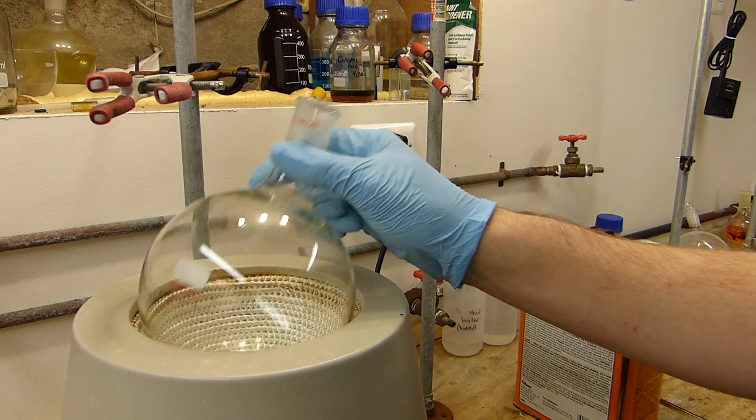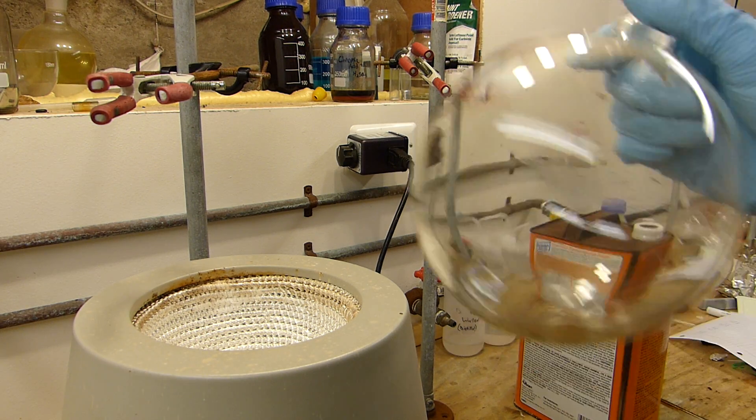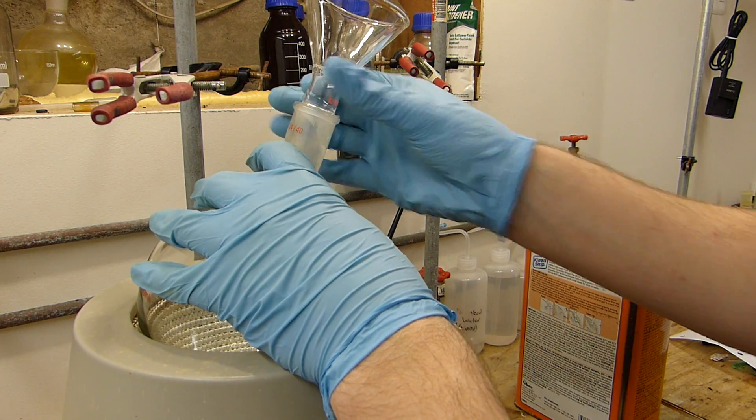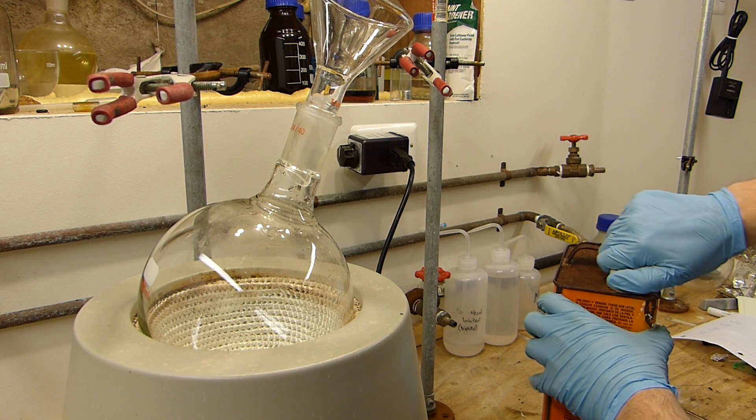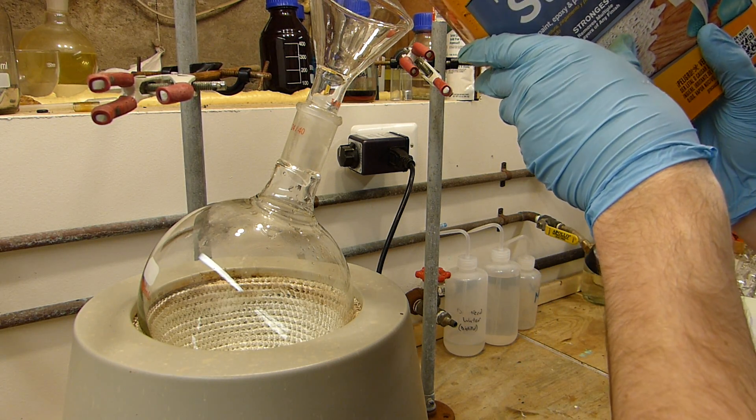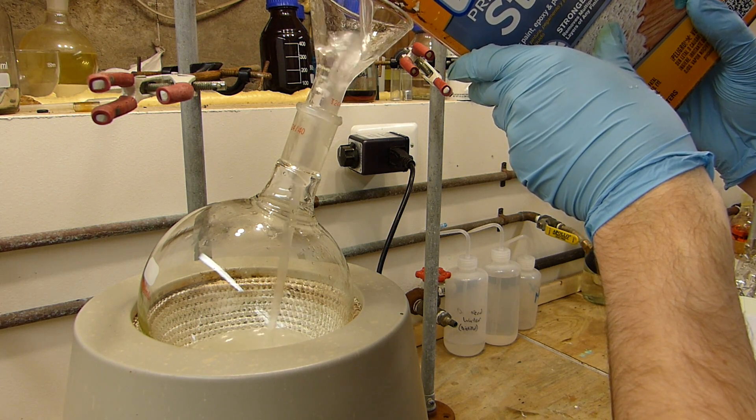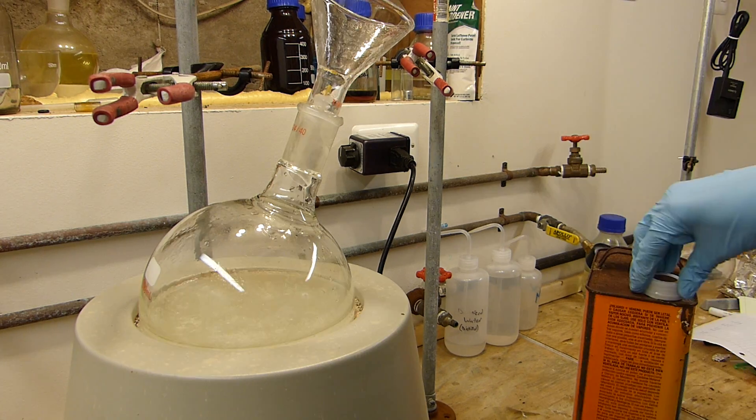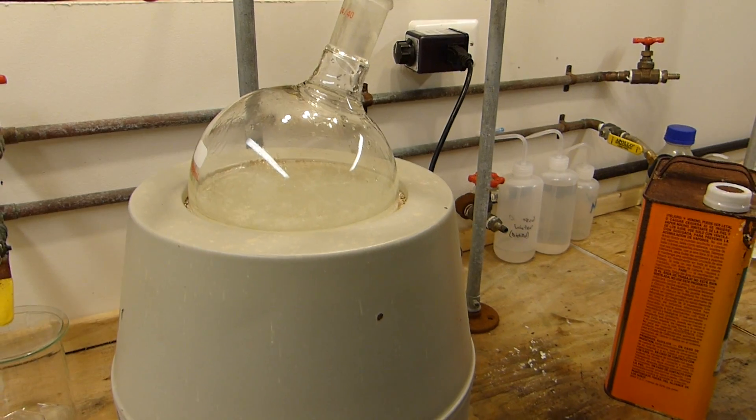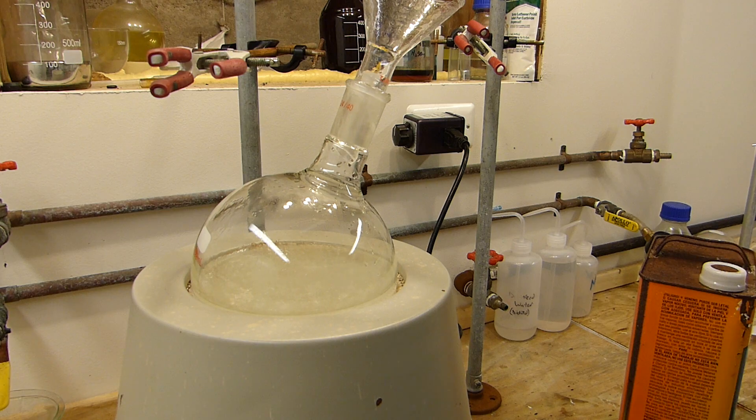All right, so the first step will be to load a bunch of the paint stripper into this flask. It's still a little wet from washing but that's not going to make a difference. I've got a one liter flask and my heating mantle here and I'll pour in some of this lovely gloopy paint stripper. You can see the flask is about half full with dichloromethane containing goop, polymer and crap, and I'll set this up for simple distillation.